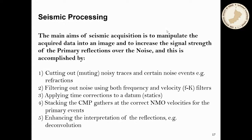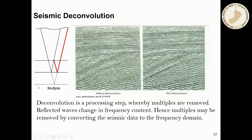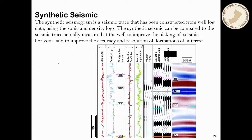Seismic processing includes migration, stacking, and deconvolution, which removes so-called multiples. Multiples occur when seismic reflections bounce multiple times through a certain layer, causing the same layer to reappear in your seismic data multiple times. Sometimes multiples can cover original seismic reflections and lead to misinterpretation. Processing techniques nowadays have improved significantly and can remove these effects.